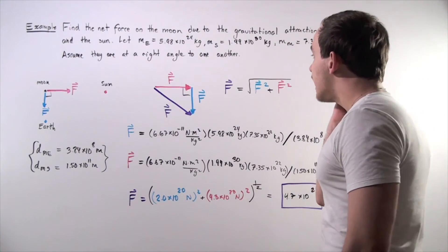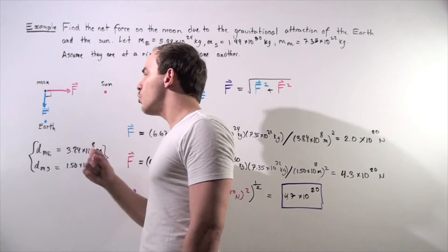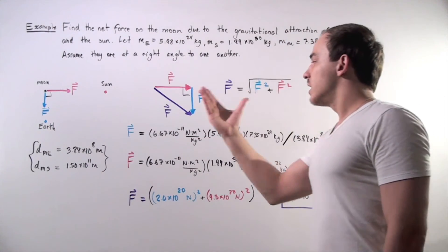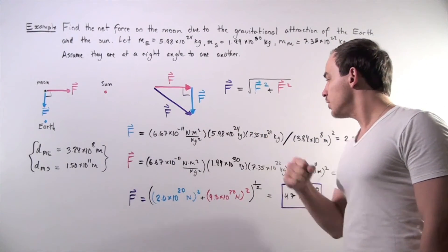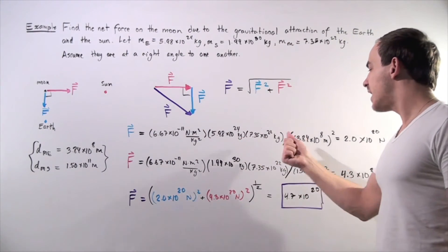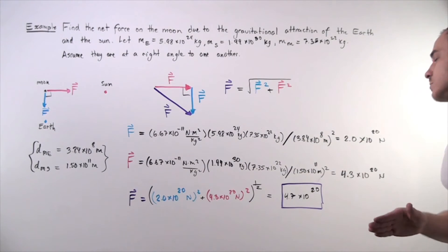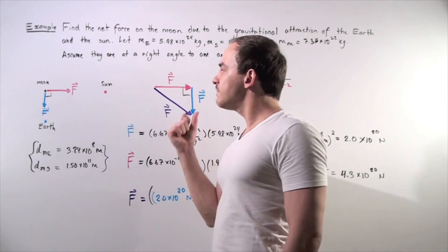So let's find what the force, the blue force is, the force on the Moon due to the Earth. We simply plug in our values. So our gravitational constant G, our mass of the Earth and the mass of the Moon, divide that by the distance between them squared, and we get approximately 2.0 times 10 to the 20 Newtons.